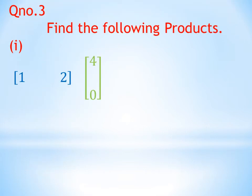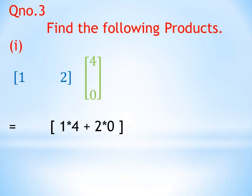In question number three, we find the following products. The first matrix is a row matrix and the second is a column matrix. There is only one row in the first matrix, hence it is called a row matrix, and only one column in the second matrix, hence it is called a column matrix. There are two columns in the first matrix and two rows in the second matrix, so they can be multiplied. First row of the first matrix is multiplied with the first column of the second matrix: 1×4 + 2×0 = 4+0 = 4. The product is the matrix with only one element, 4.